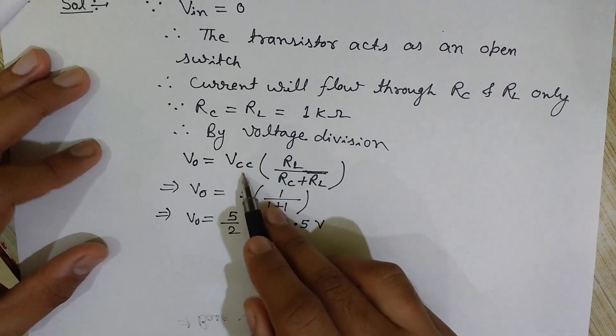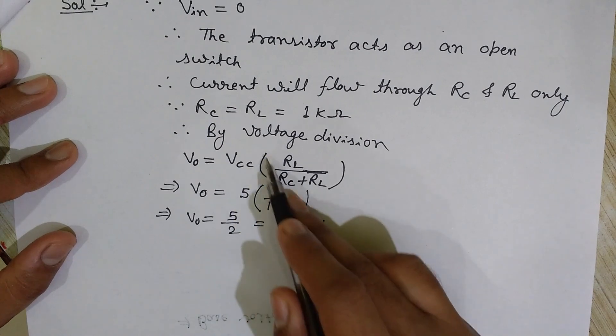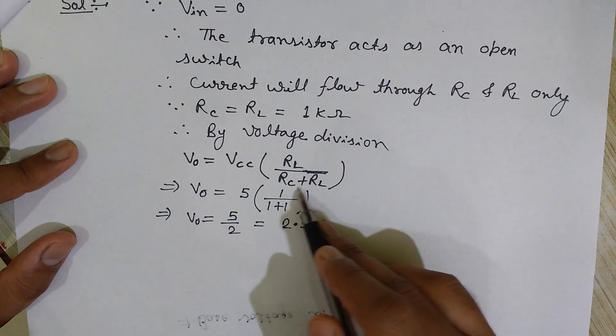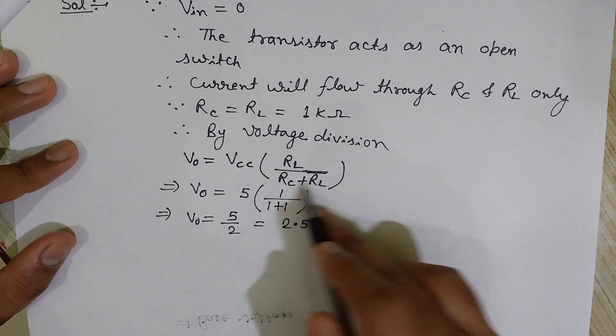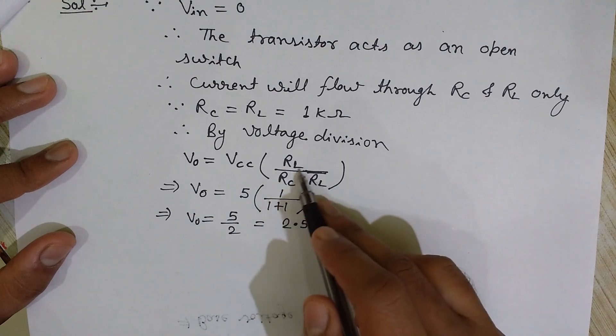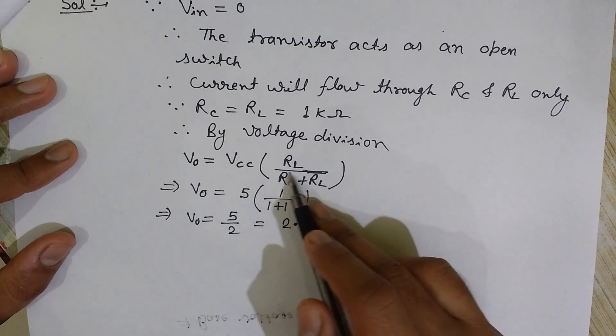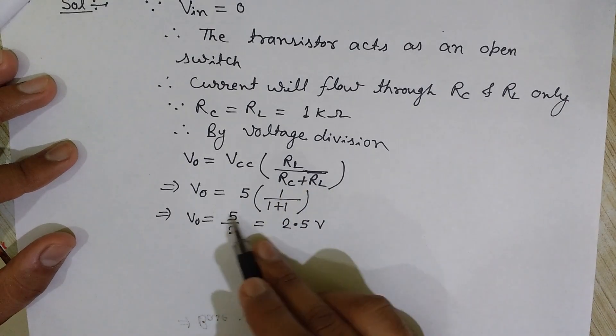All the resistances in the denominator and the resistance across which we want to calculate the voltage is in the numerator. So RL is 1 and RC plus RL, 1 plus 1. So V0 will be 5 into 1 by 2, so 5 by 2, 2.5 volts.